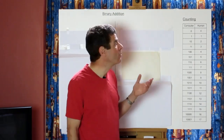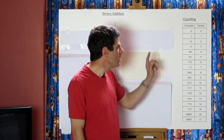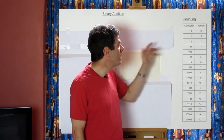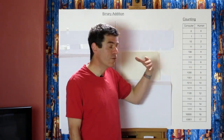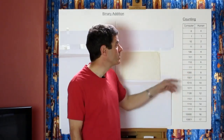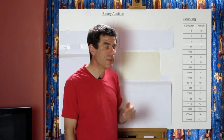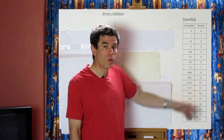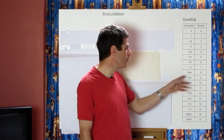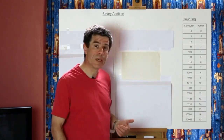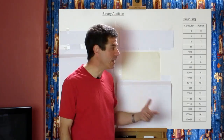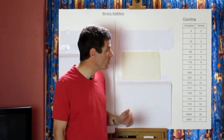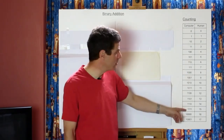If we wanted to count further than 1 we'd need to add another column — this will be a 2s column, because it's base 2. And that will let us count up to 3. If we want to count further than 3 we'd need to add another column: a 2 times 2 times 2, which is 8, so an 8s column. And that will let us count up to 15, and so on and so forth. So this is counting in binary.